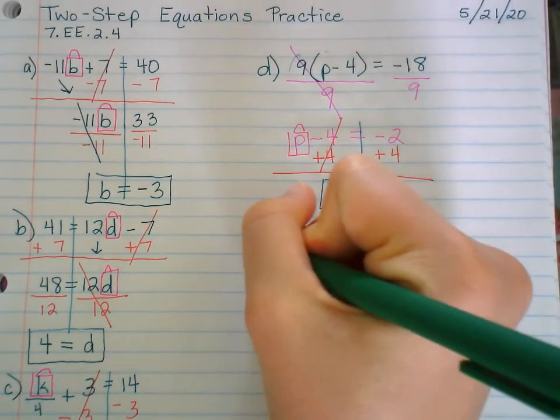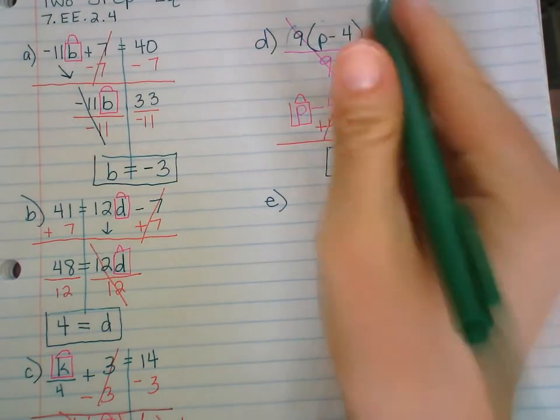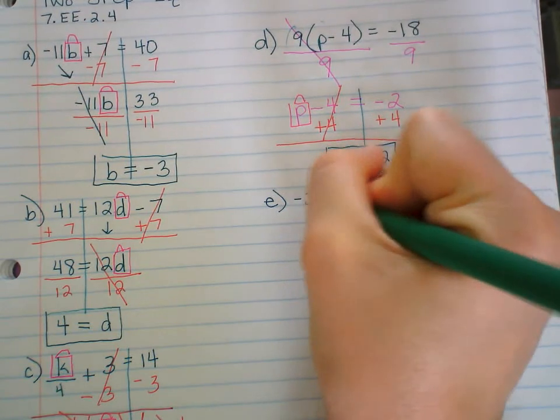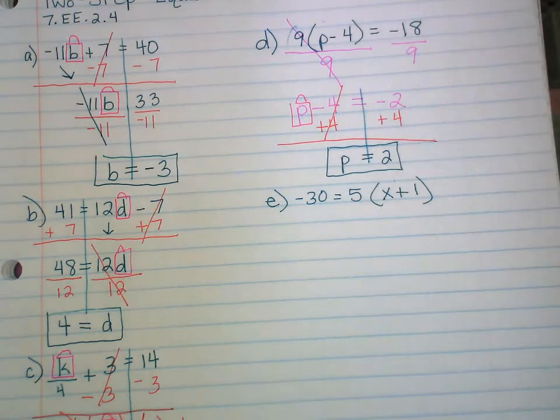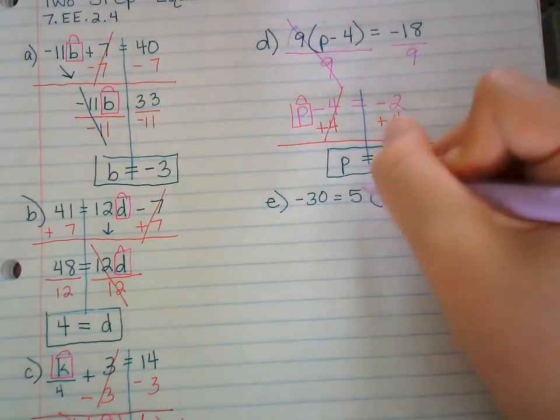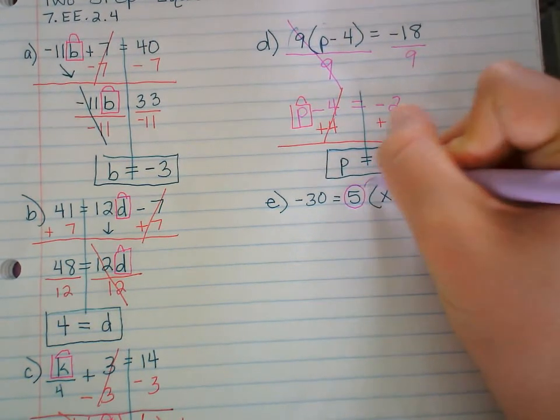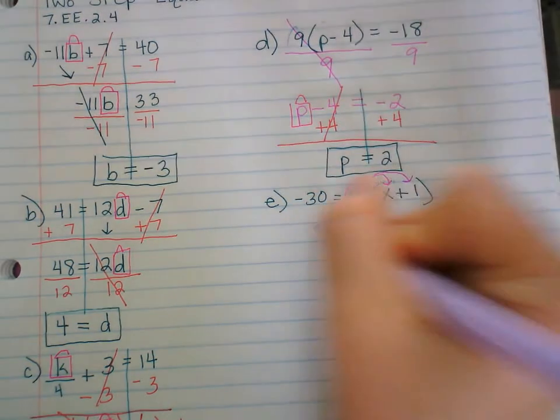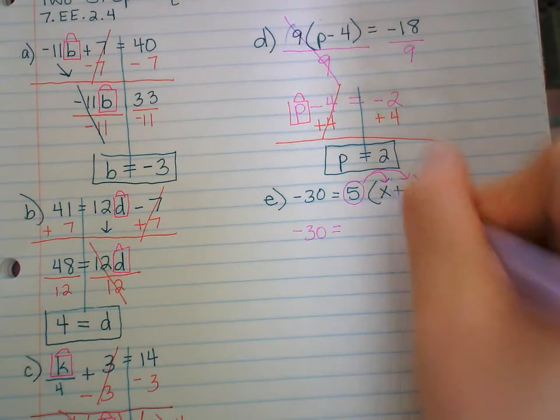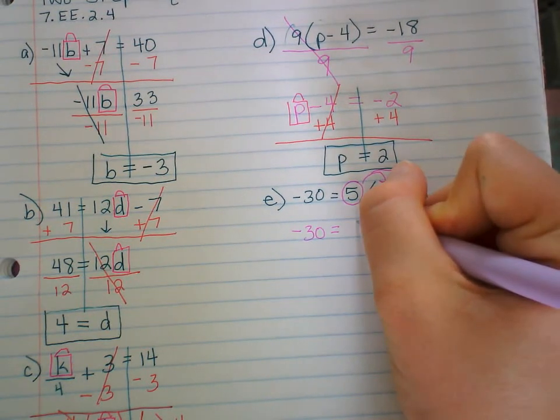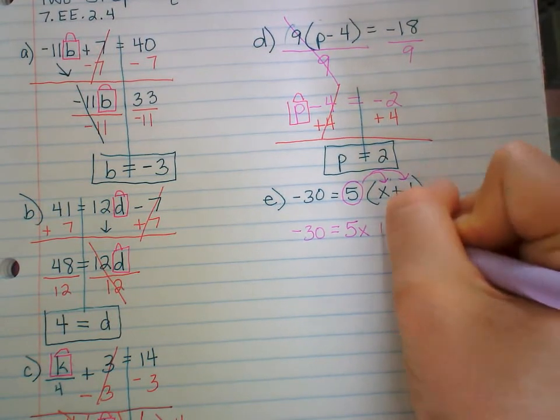Two more examples. Example E. We're going to try another one like that. -30 = 5(x + 1). So again, you could be like, hey, I know this is distributing. I know this 5 because this is all in parentheses, it's being multiplied by both. And you could just rewrite it. Bring down the -30 and the equal sign. 5 times x is 5x. 5 times positive 1 is positive 5. And then it's a two-step equation.